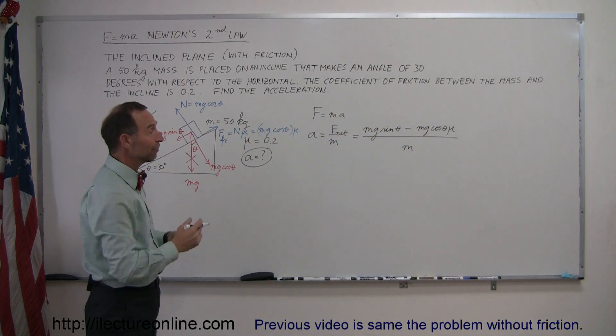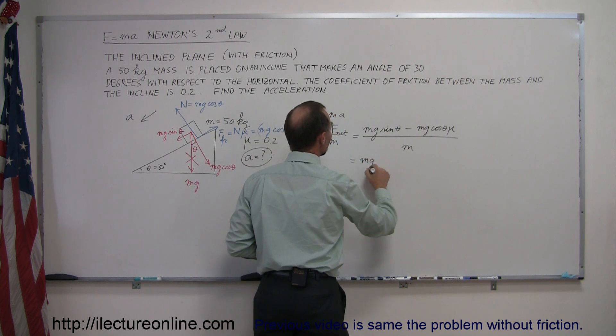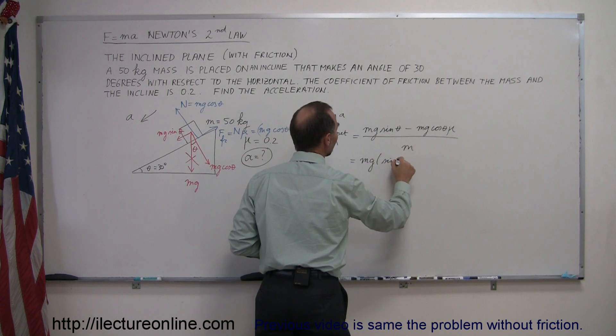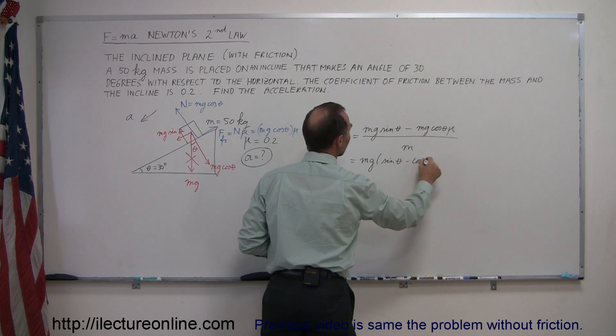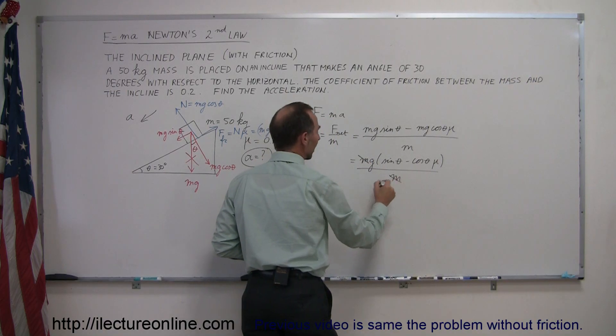If I now go ahead and simplify that algebraically, I can see that I can factor out an mg, so this becomes mg, times the sine of theta, minus the cosine of theta times mu, all divided by m, mass, and the masses cancel out,